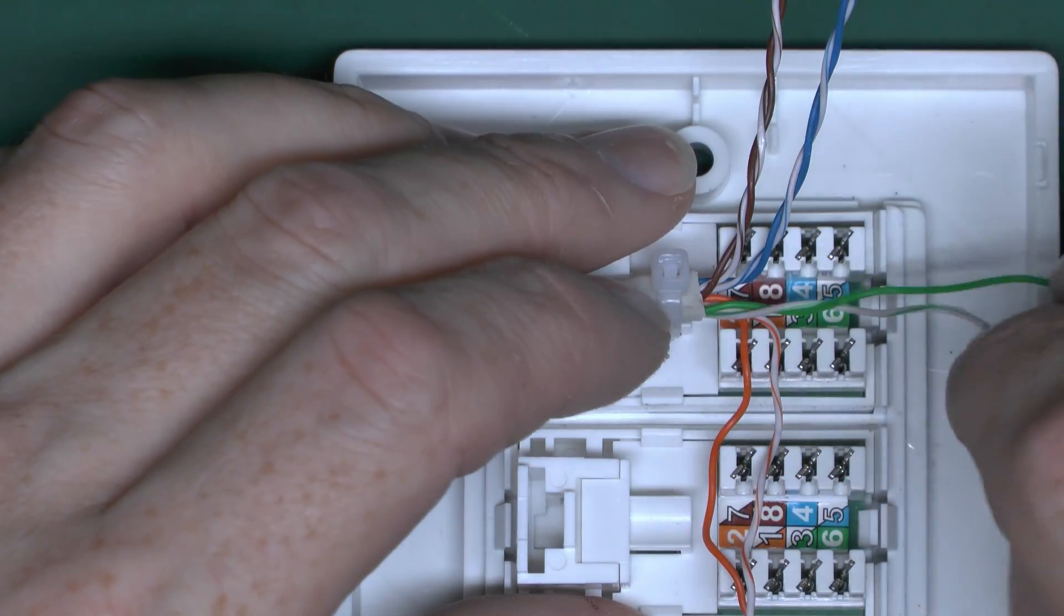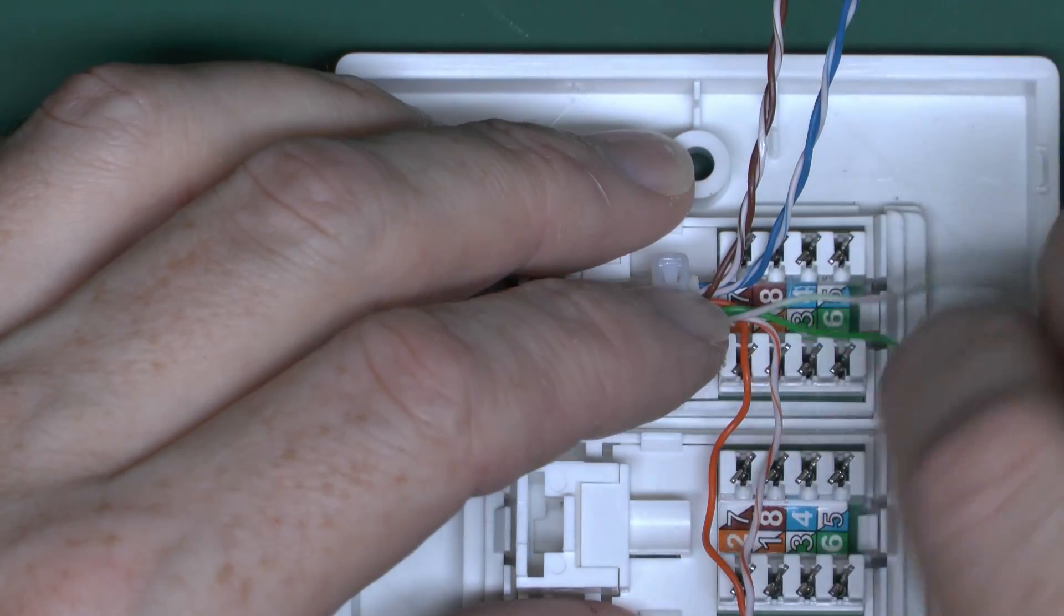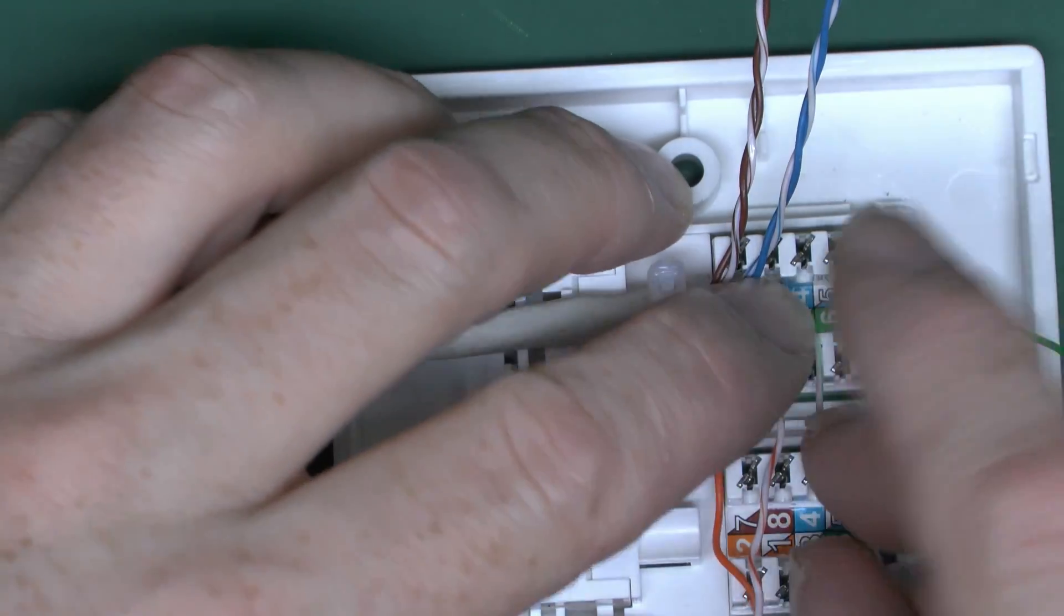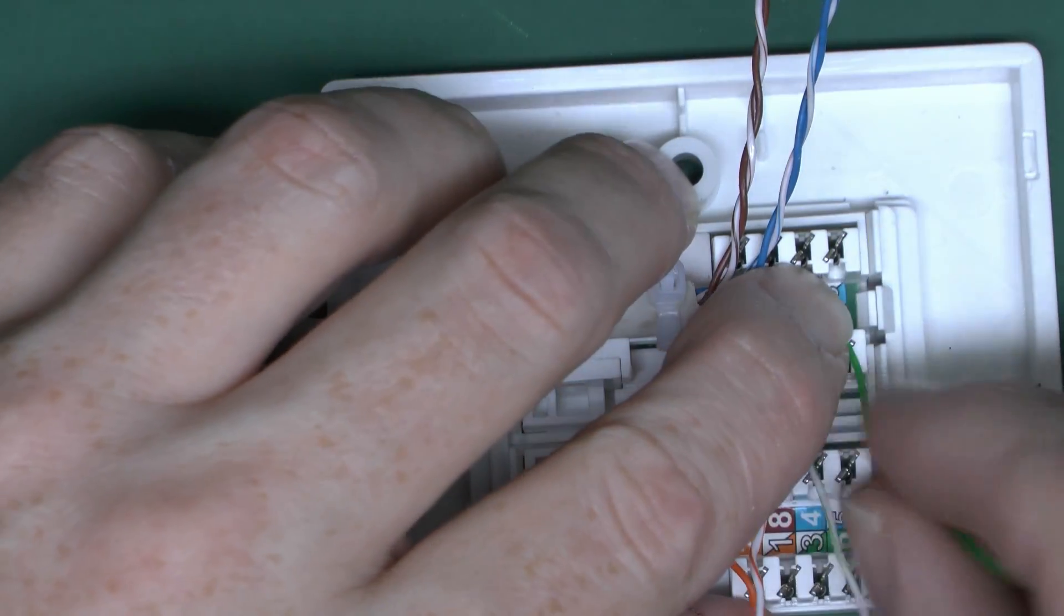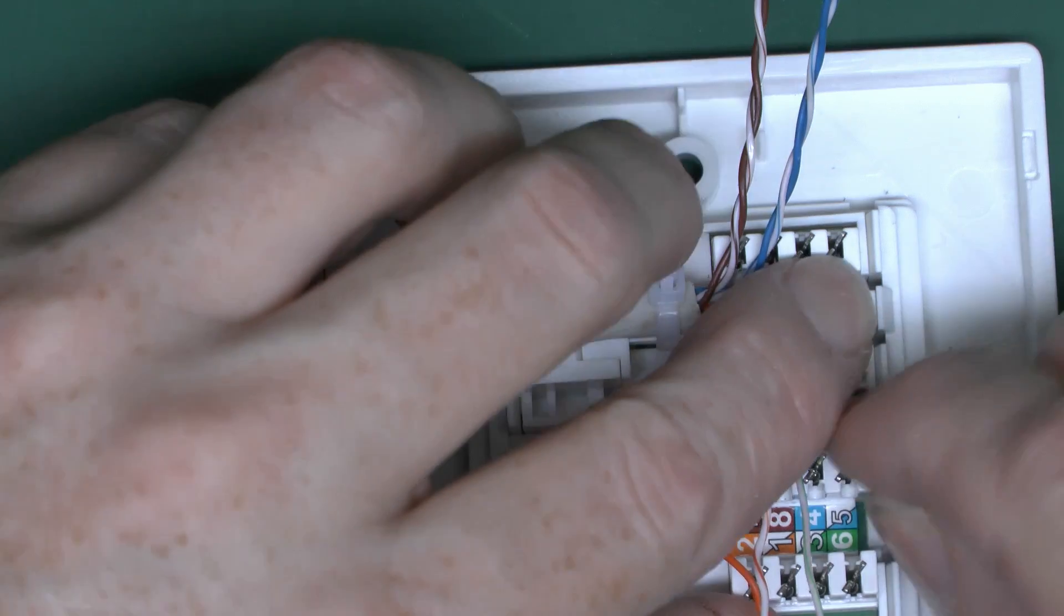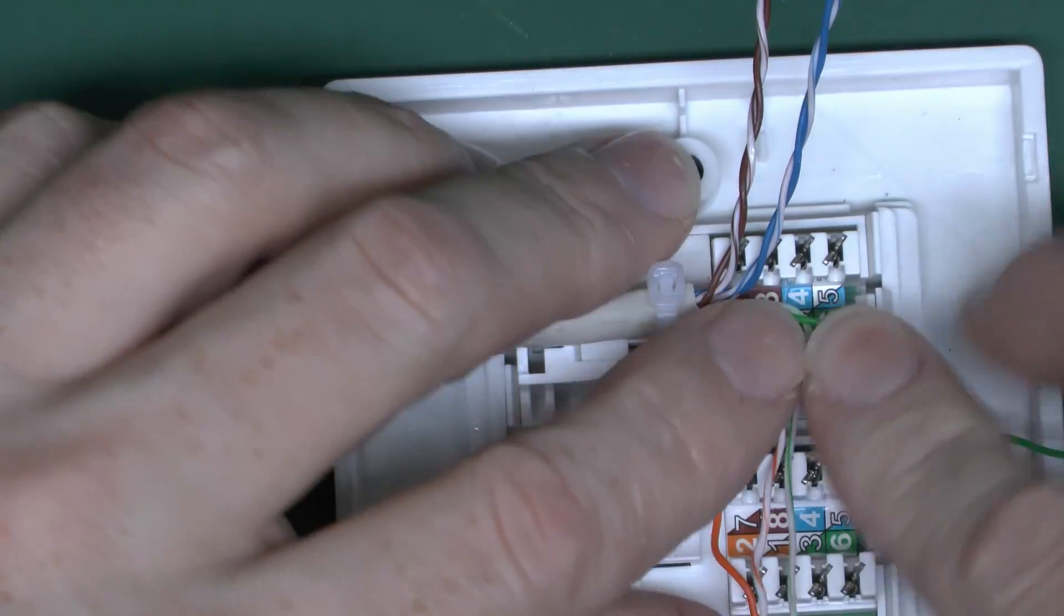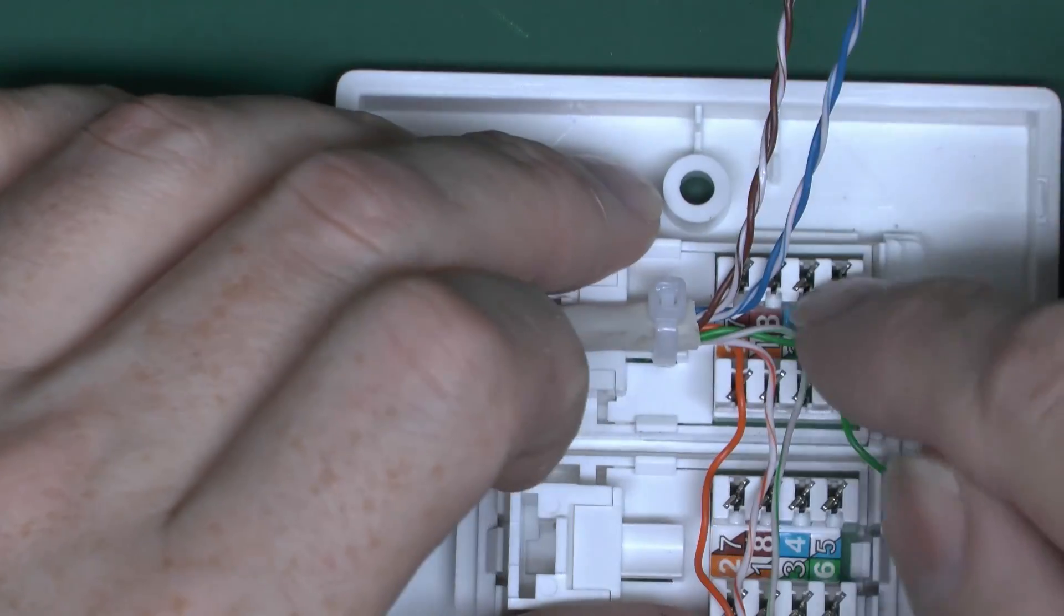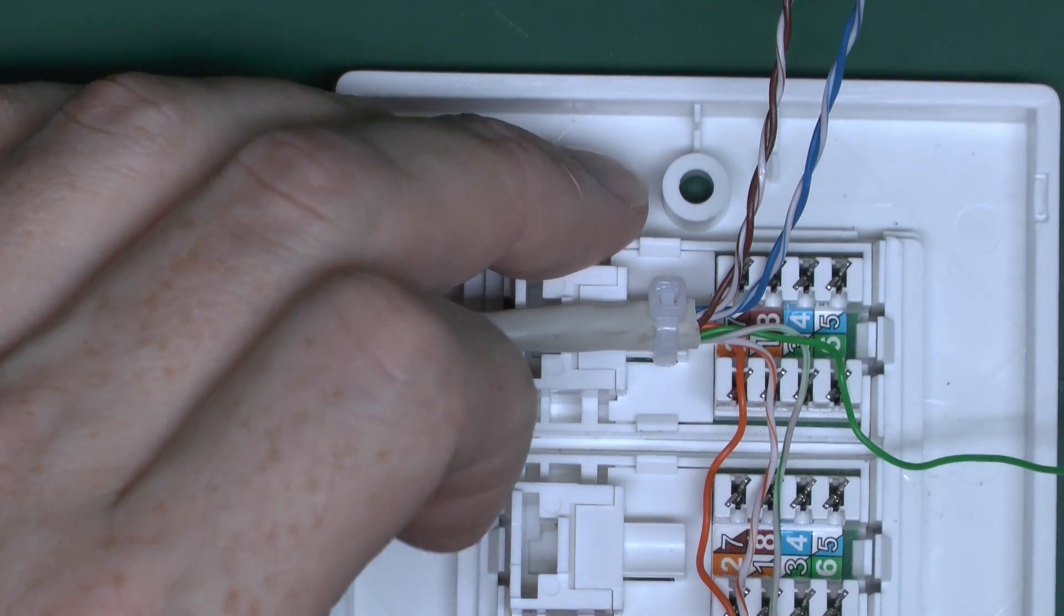We've got the green one here, so we want the white with green on the first one and the solid green on the second one. Those just go down in there, and it's the same on the other side for the blue and the brown.